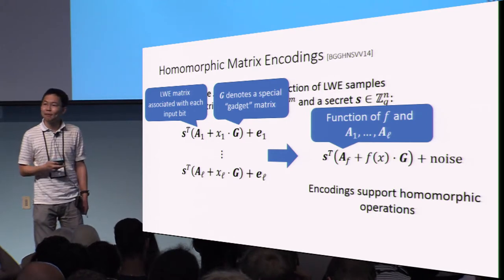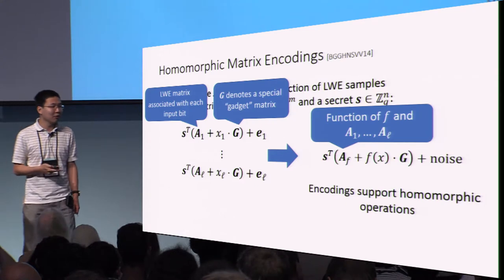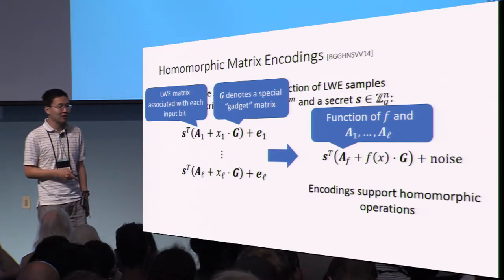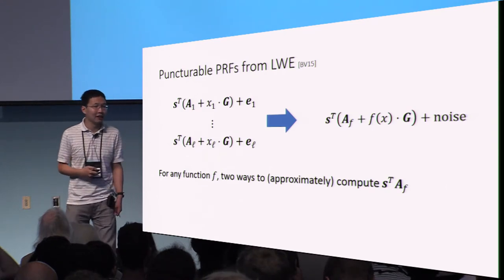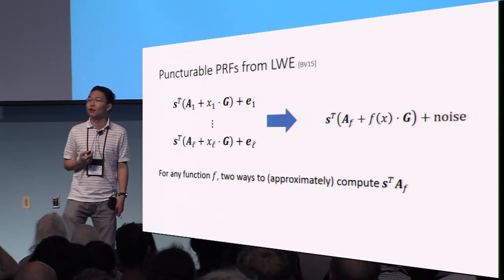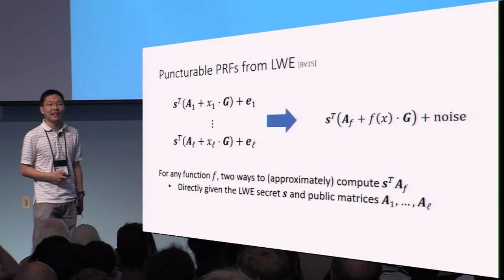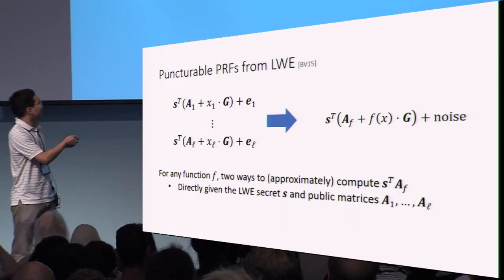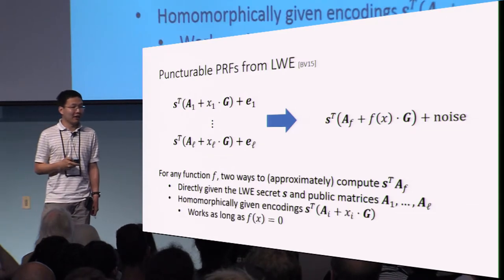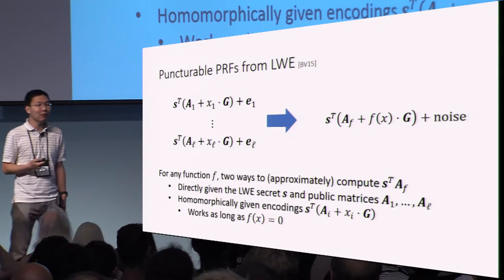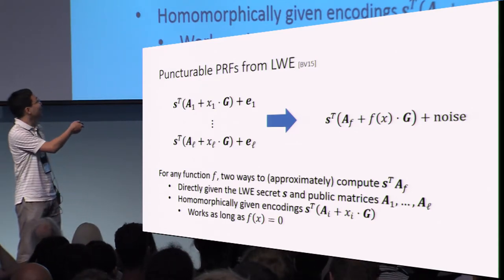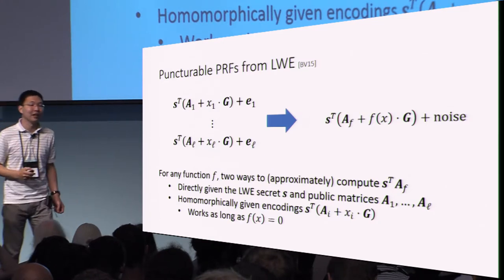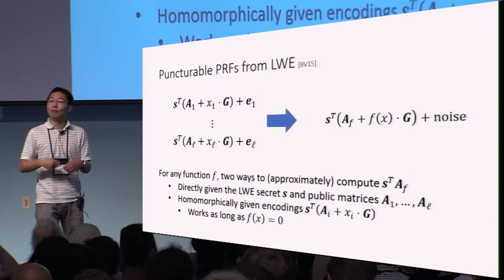Using homomorphic matrix encodings, I will now give you a step-by-step overview of how we build private translucent PRFs. Our construction proceeds through several components: first we build a puncturable PRF, then a private puncturable PRF, and finally a private translucent PRF. The puncturable PRF construction is due to Brakerski and Vaikuntanathan, and relies on the observation that given any function F, there are essentially two ways of computing the quantity S^T A_F. One way is directly, given the LWE secret S and the public LWE matrices A_1 through A_L — we just homomorphically compute S^T A_F. The second method is homomorphic: if you're given the encodings of some x such that F(x) equals zero, then using the homomorphic properties of these matrix encodings, we can derive something that looks like S^T A_F plus some noise. These two ways roughly correspond to a master key evaluation and a punctured evaluation.